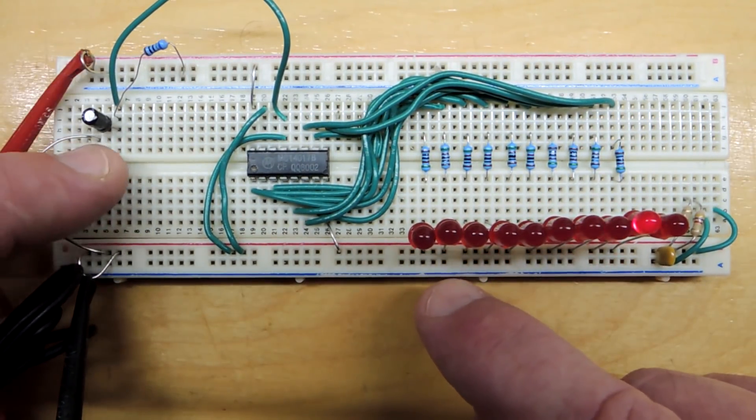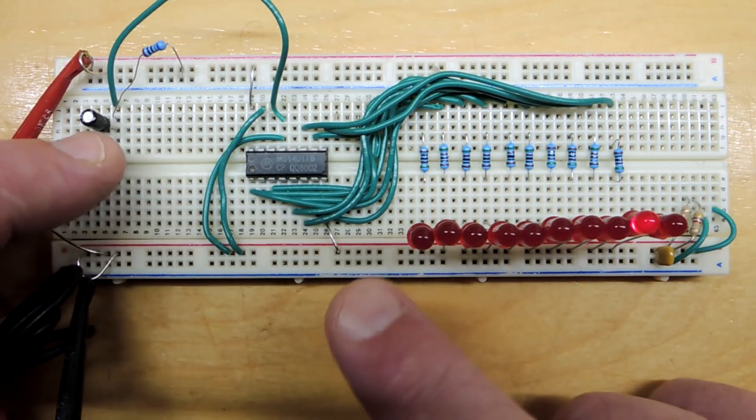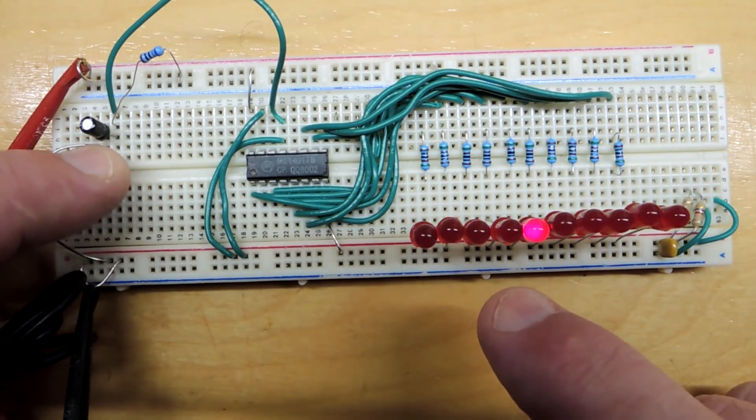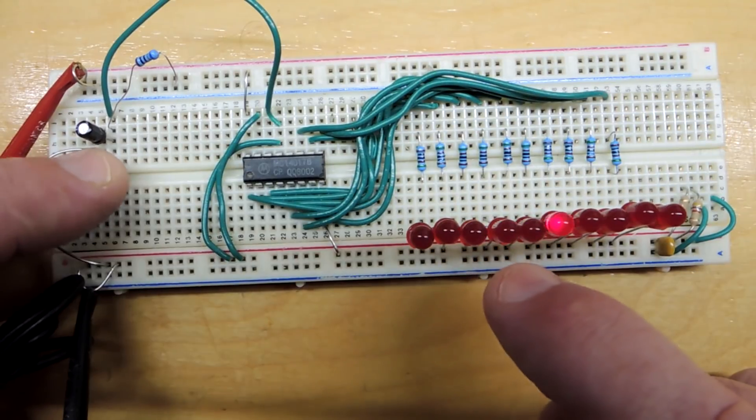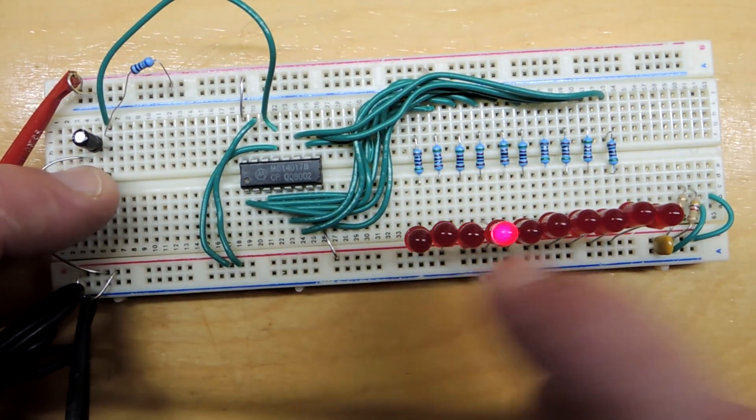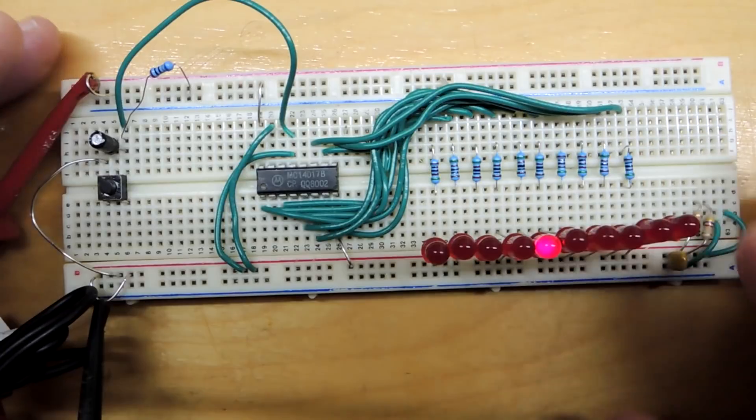And in fact, if you replace this switch here with a slow speed oscillator, what you get is a very satisfying light chasing pattern. In fact, it's a nice little circuit to whip up, a nice little novelty design.